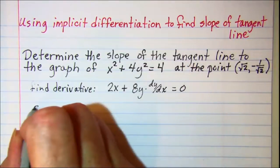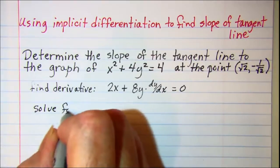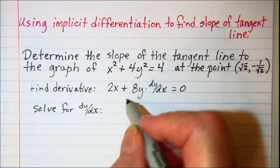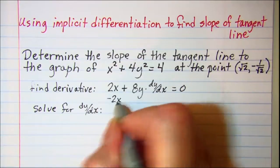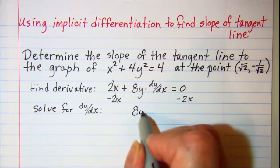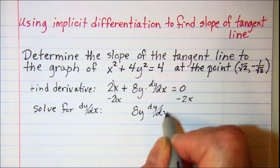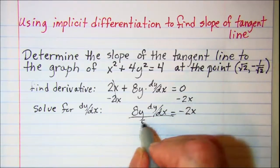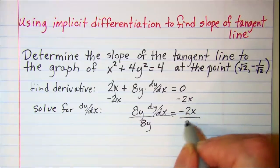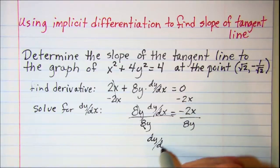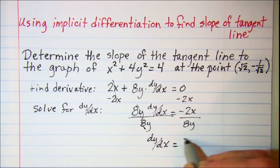We need to now solve for dy dx, so I'm going to subtract 2x from both sides, so cancel and I have 8y dy dx is equal to negative 2x. Divide both sides by 8y. These will cancel and I have dy dx is equal to negative x over 4y.